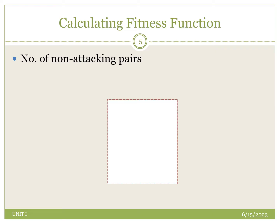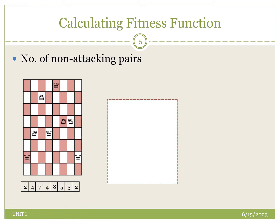Let us evaluate the fitness for the first population. Taking the first queen, which is placed in the second position, we compare it with all seven remaining queens, checking horizontally, diagonally, row-wise, and column-wise. In this case, one queen is in the same row, so six out of seven queens are in non-attacking positions. So the non-attacking count for queen 1 is six.